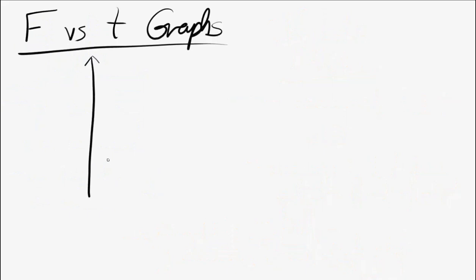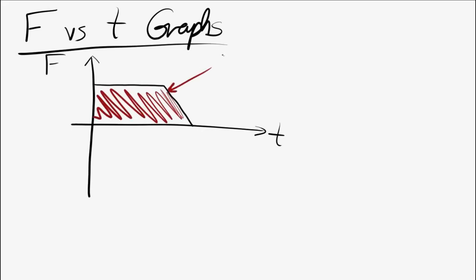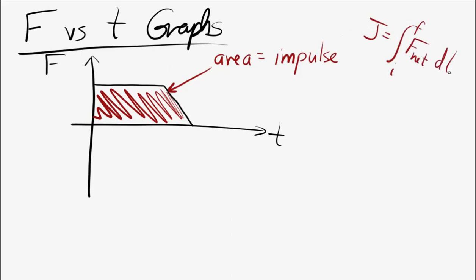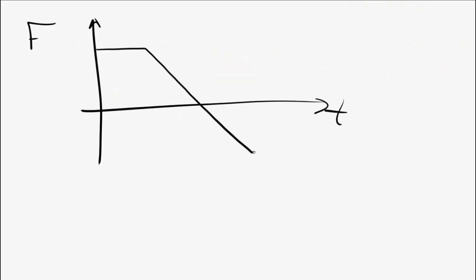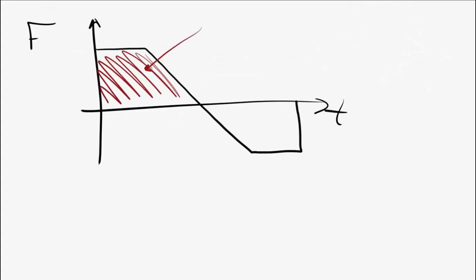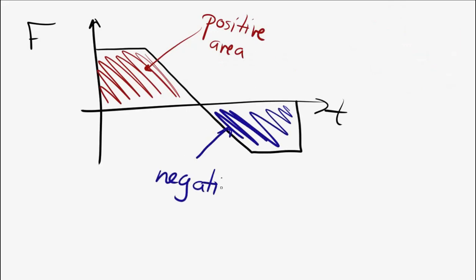Let's look at force versus time graphs. The vertical axis is force and the horizontal axis is time. The area under the curve tells you the impulse. For those who've taken calculus, impulse is the integral of force with respect to time. When finding the area under the curve, areas above the horizontal axis are considered positive, and areas below the horizontal axis are considered negative.